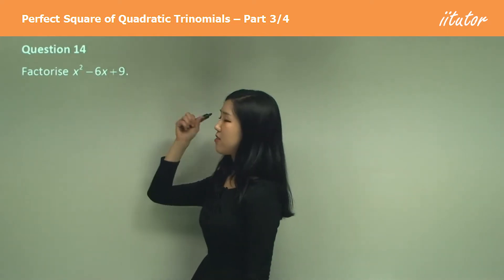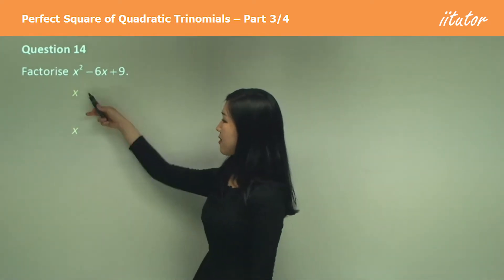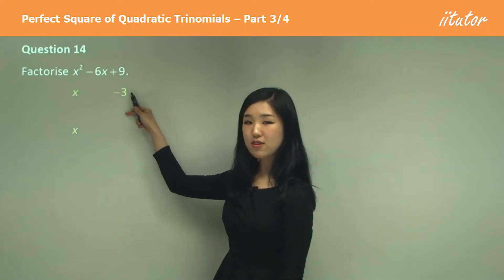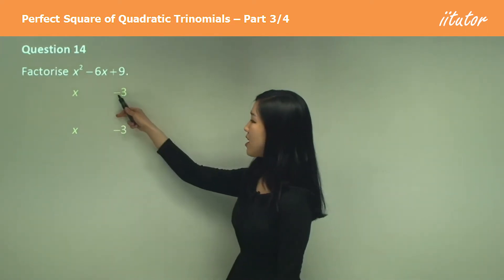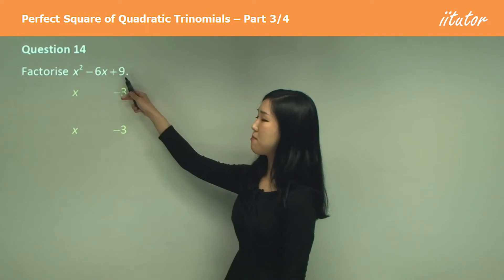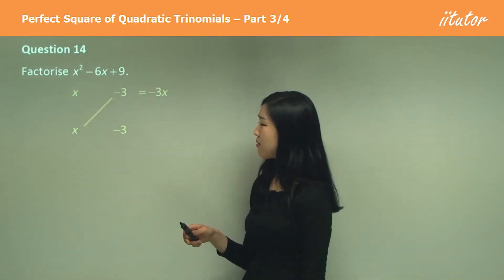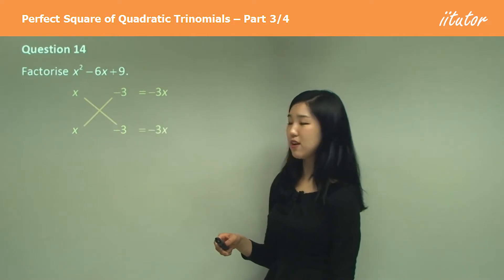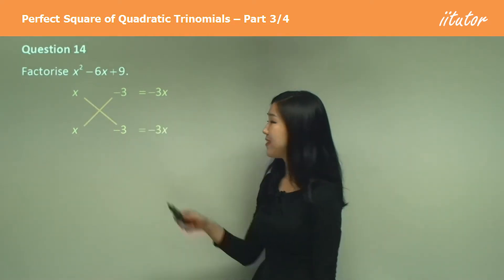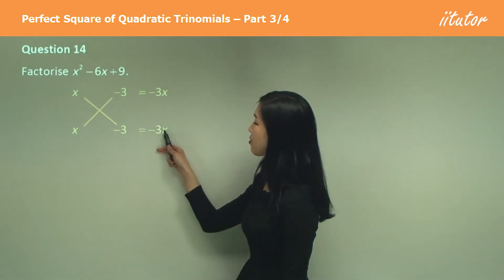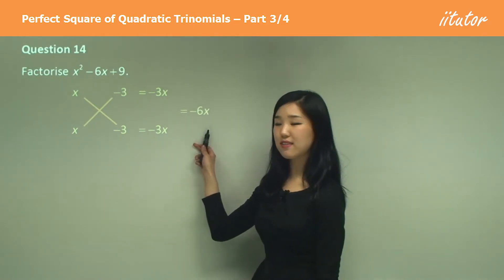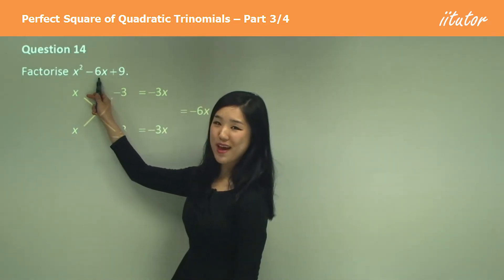So this time I'm going to use the same factors but with x and x, and this time I'm going to use negative 3 and negative 3 because I know that negative 3 times negative 3 makes positive 9. And if you cross multiply you get negative 3x, cross multiply you get negative 3x. But remember, negative 3x minus 3x is negative 6x, which is exactly the same as what we have here.